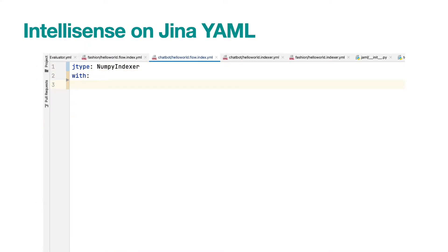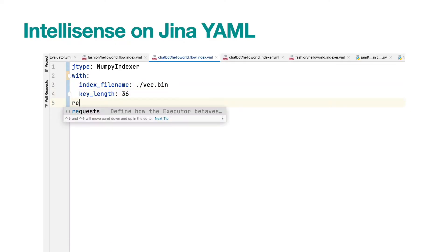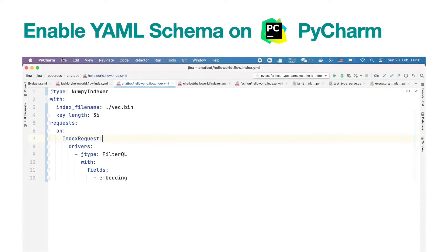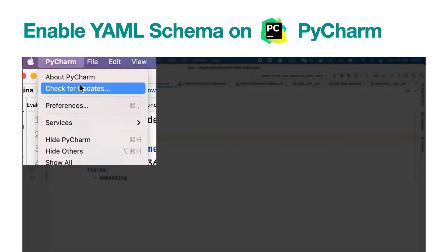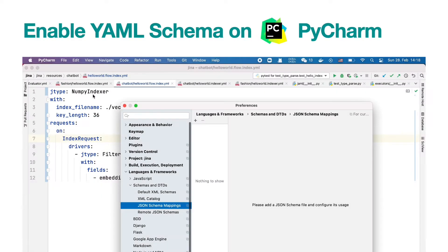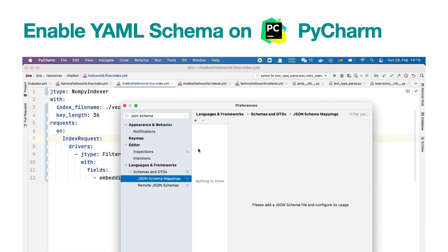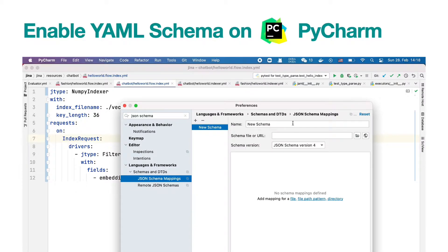Now I'm going to show you how to enable IntelliSense for GINA YAML configs in PyCharm. If you are a VS Code user, please jump to the later part of this video. First, open your PyCharm. Click on the menu and select Preferences. In the left panel, search for JSON schema in the search box and select JSON schema mappings. Next, in the right panel, click the plus icon and add a new schema.